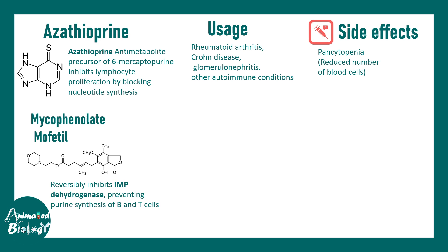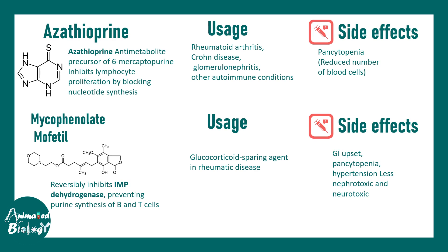Mycophenolate mofetil inhibits the enzyme IMP dehydrogenase, which is crucial for purine biosynthesis. When this enzyme is blocked, T and B cell proliferation is blocked. It is used as a glucocorticoid-sparing agent in rheumatic disease. Side effects include GI upset (because intestinal cells divide rapidly), pancytopenia (because hematopoietic stem cells must divide to produce blood cells), hypertension, nephrotoxicity, neurotoxicity, and it is associated with invasive CMV infection.